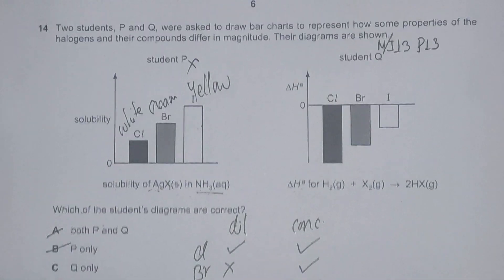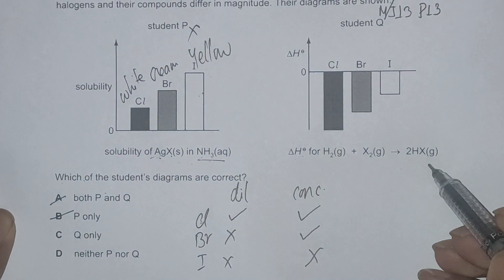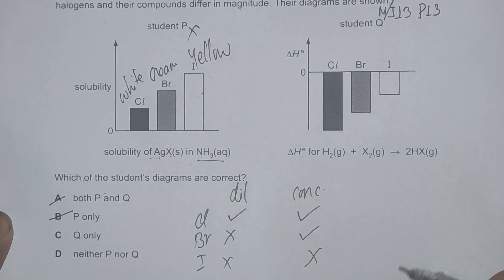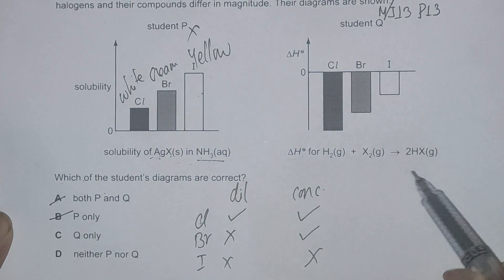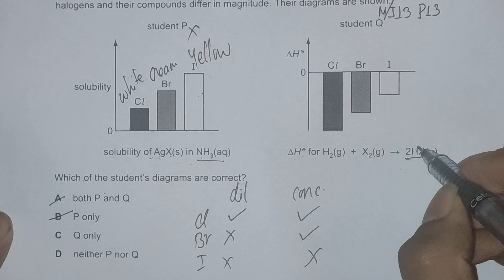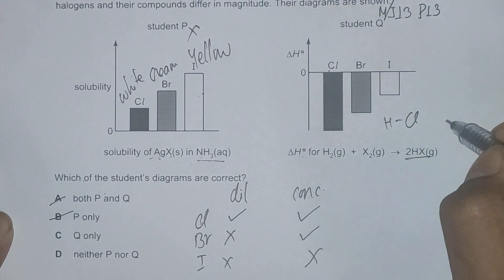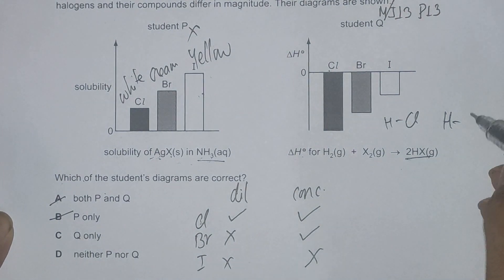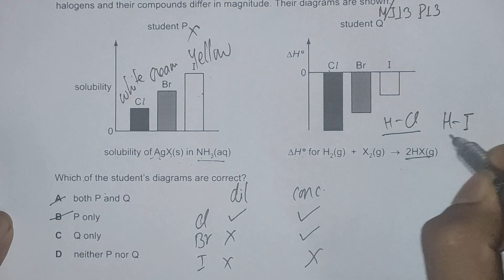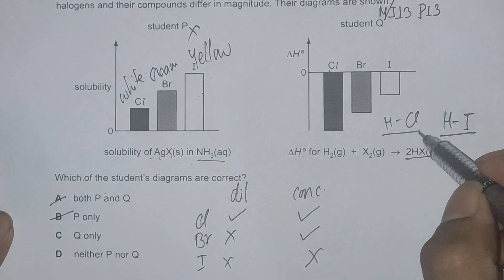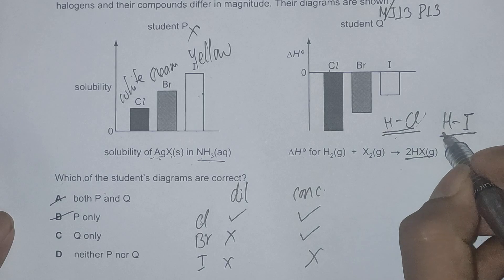Now checking for this fact, the bond length of HX increases down the group. That means it requires less and less energy to break the HX bond. That means very high energy to break the HCl bond, relatively high energy to break the HBr bond, and relatively less energy to break the HI bond. That means the enthalpy change for HCl should be higher or more exothermic than HI.